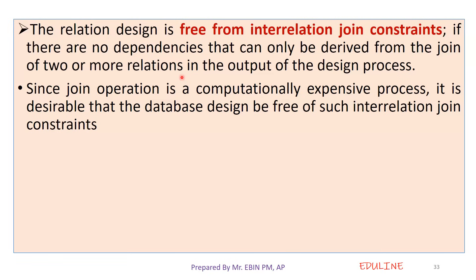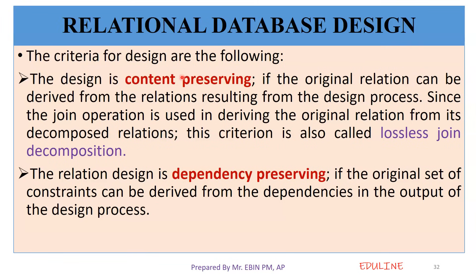If there are no dependencies that can only be derived from inter-relation join constraints, then our design is good. If we create a relationship where dependencies can only be assigned via inter-relation join constraints, that means we have made inter-relation join constraints. We want our design to be free from this and keep join operations cheap. These are the three main design criteria for relational database design.